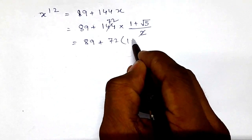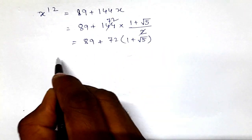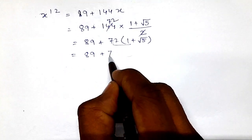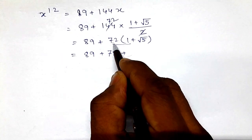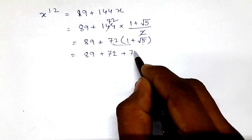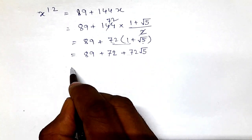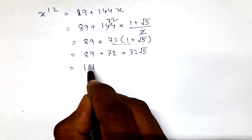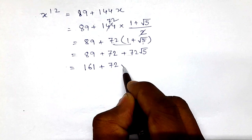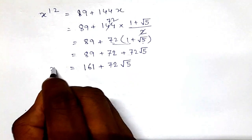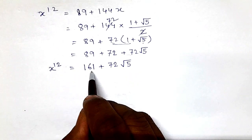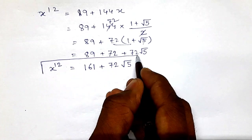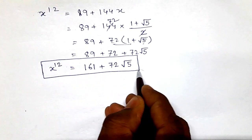Collecting constants: 26 plus 63 is 89, and the x terms: 39 plus 42 plus 63 is 144x — but combining gives us the expression 72(1 plus root of 5). Expanding the bracket: 72 times 1 plus 72 times root of 5 gives 72 plus 72 root 5. Therefore x to the power 12 equals 161 plus 72 root 5, and this is our required answer.